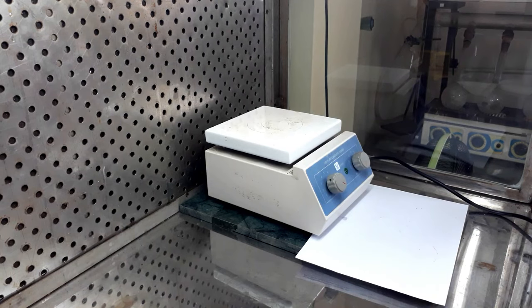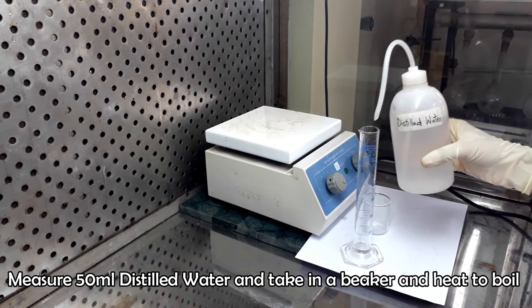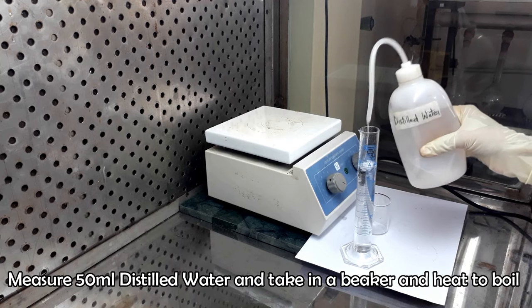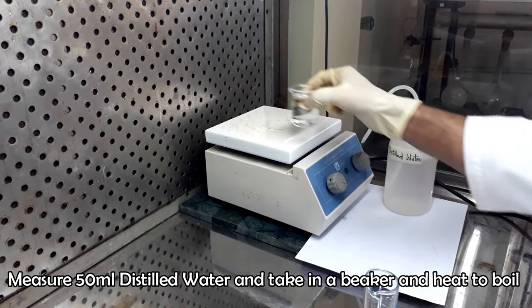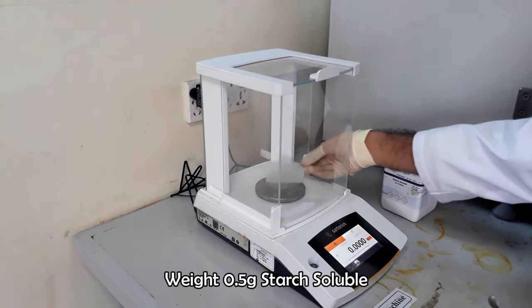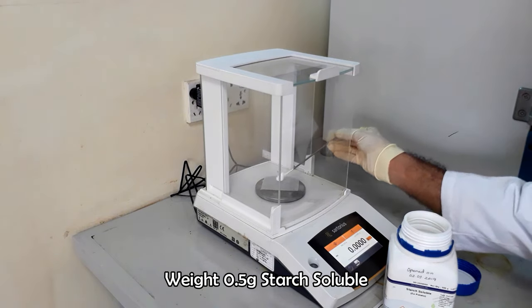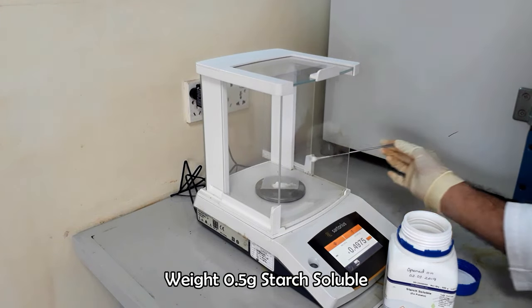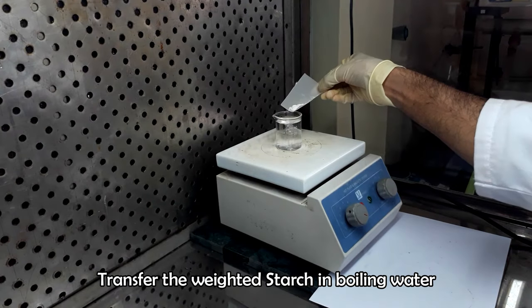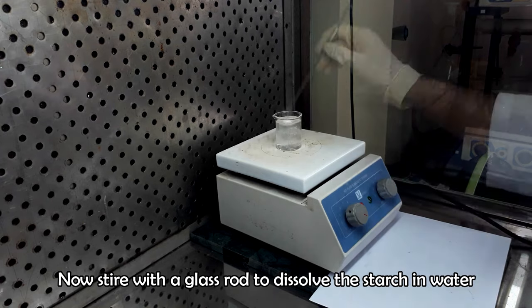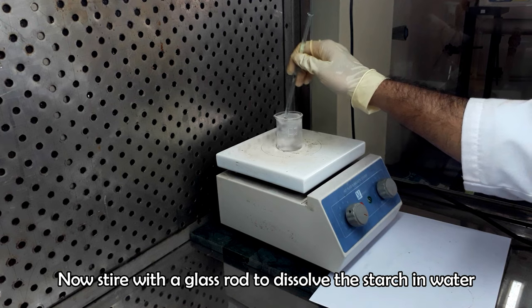Now we are going to prepare 1% starch solution. Measure 50 ml of distilled water and take it in a 100 ml beaker. Place the beaker on a hot plate and heat the water to boil. Take the weight of 0.5 g of starch soluble and transfer it into the boiling water. Stir the solution with a cleaned glass rod while boiling to dissolve the starch in water.